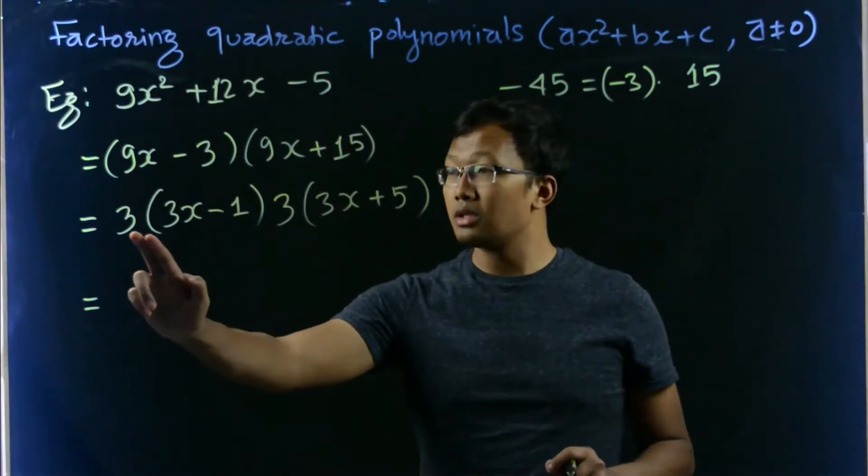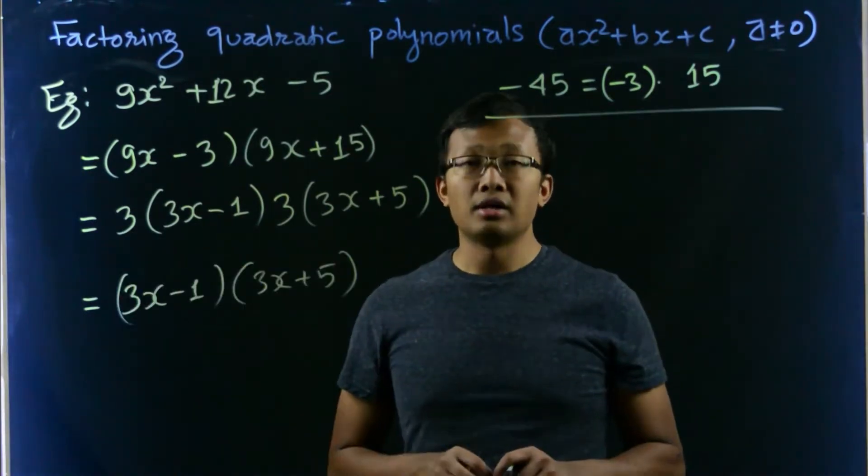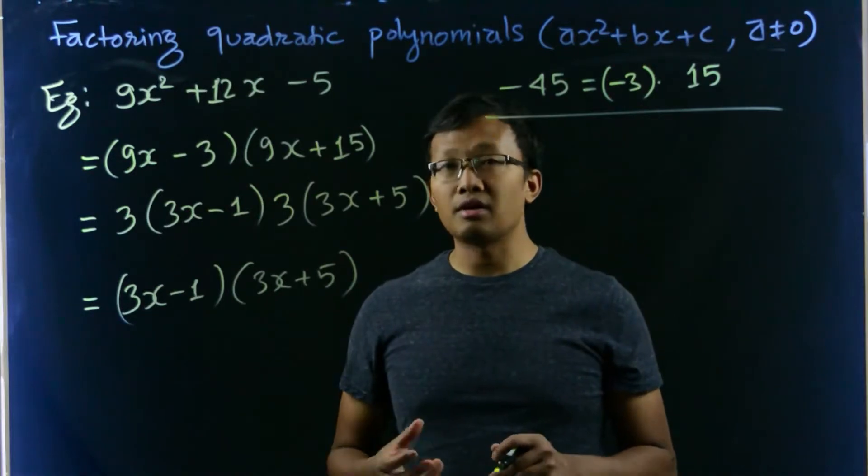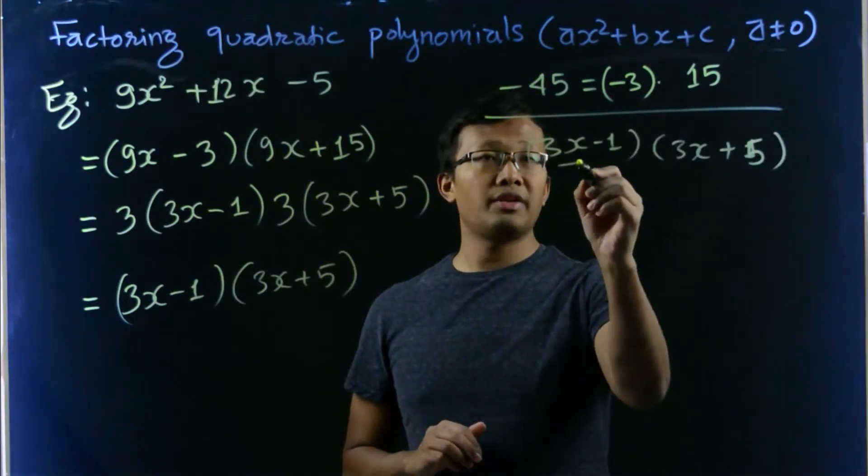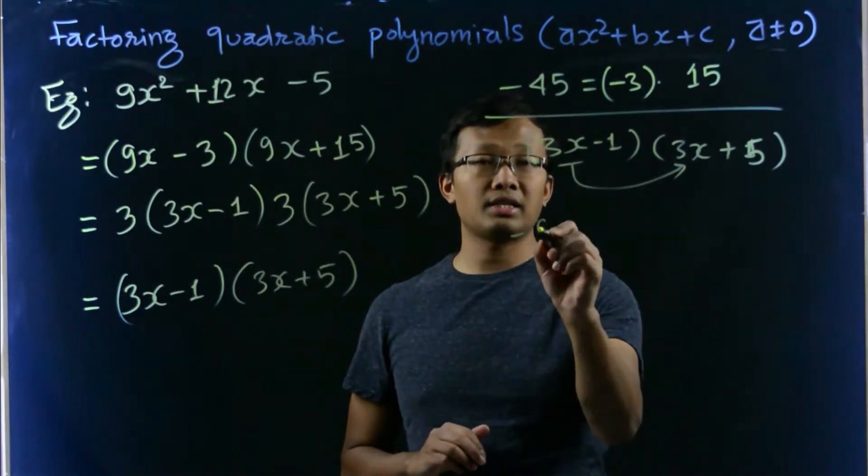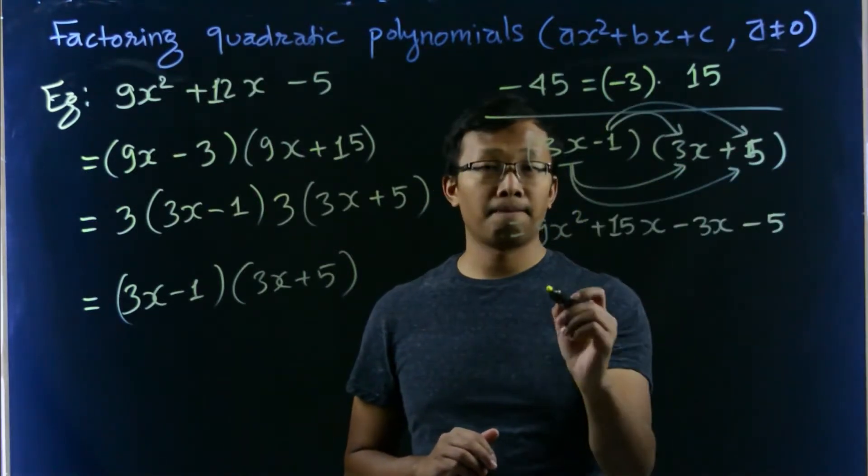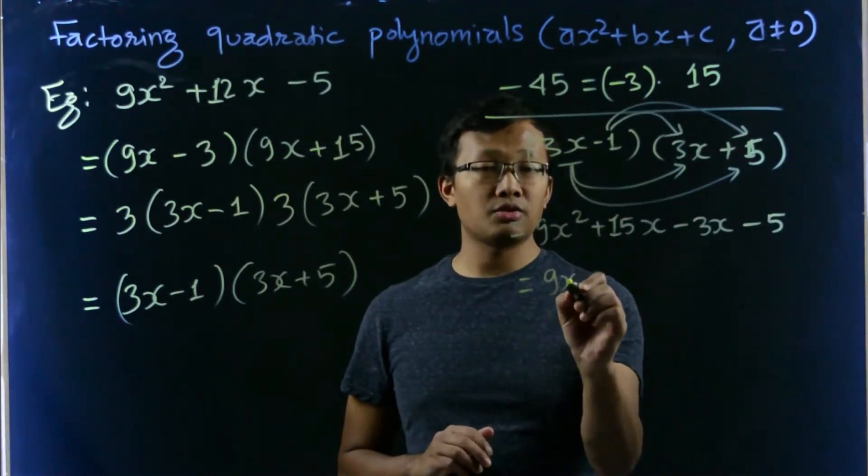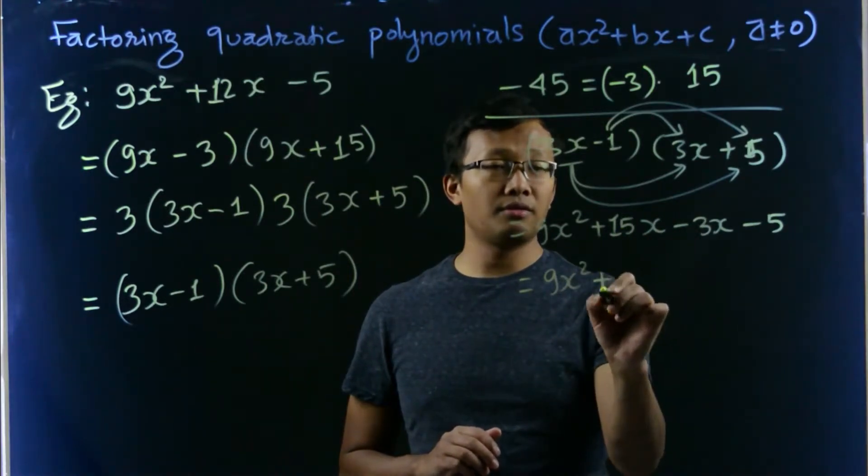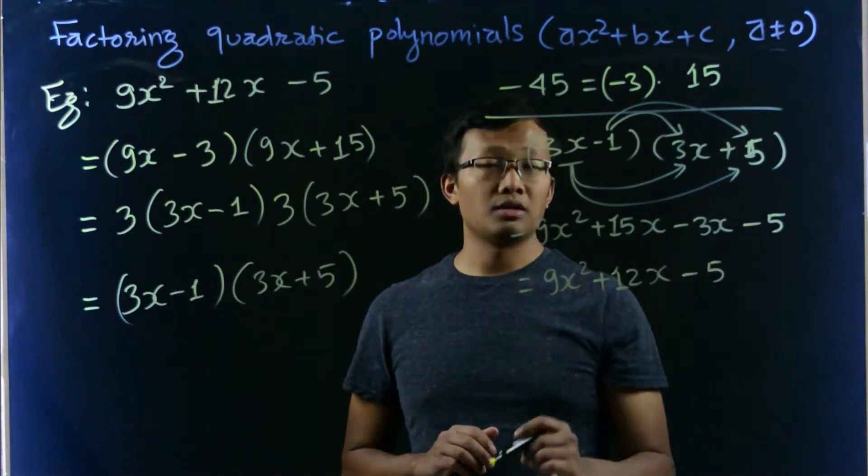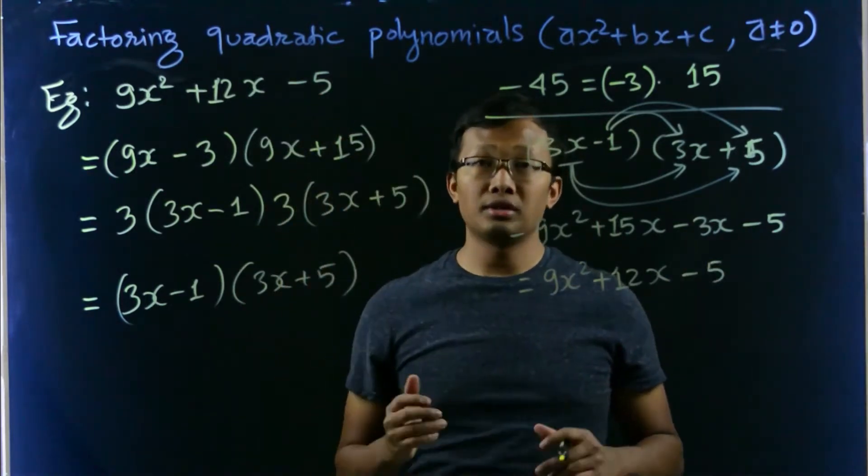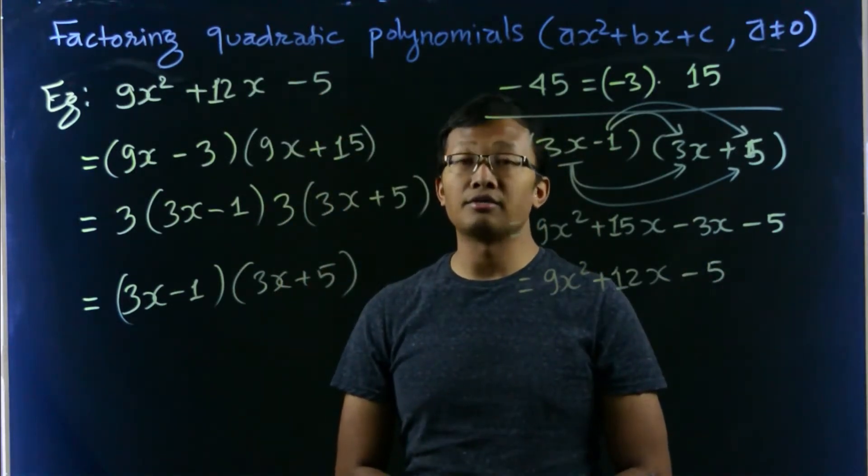Thus our correct factors are 3x minus 1 times 3x plus 5. We ignore the common quantities. Now to see whether these factors are correct or not, we check. So 3x times 3x is 9x squared. Thus we get 9x squared. 15 minus 3 is 12, 12x minus 5. Thus we get the same original quadratic polynomial, so our factors are correct.